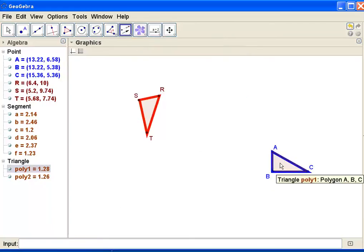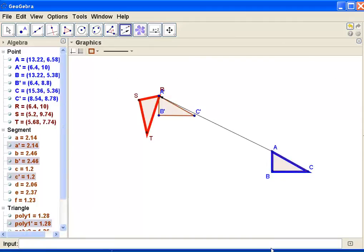So I'm going to translate this polygon. And then I'm going to translate the vector from A to point R. So now I have my translated triangle.